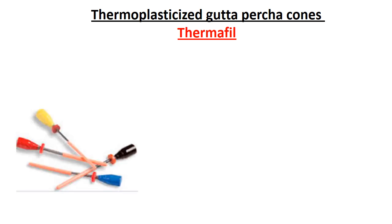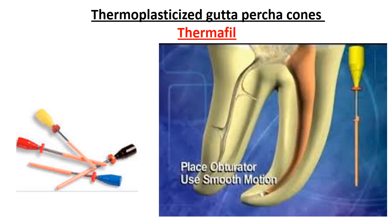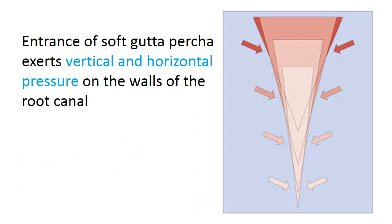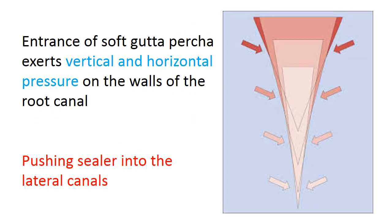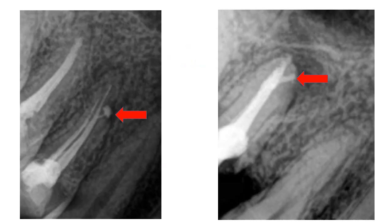Another type is thermoplasticized gutta-percha cones, namely Thermafil — plastic cones coated with gutta-percha. The gutta-percha is softened, and as it enters the canal, there is vertical and horizontal pressure on the walls of the root canal, pushing sealer into lateral canals. As we can see, the sealer has been pushed into the lateral canals.